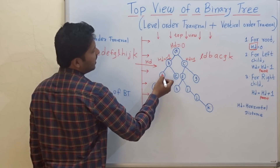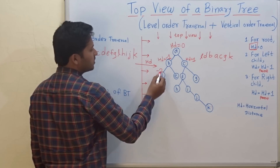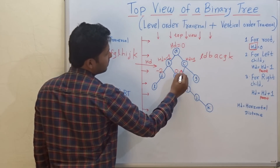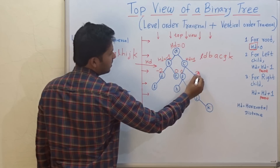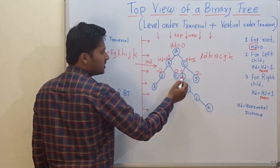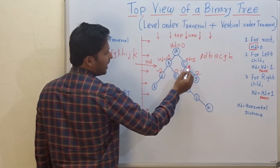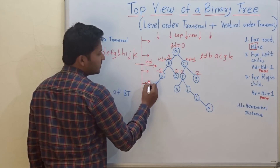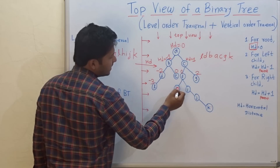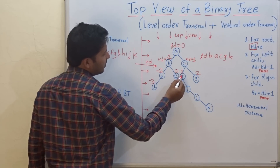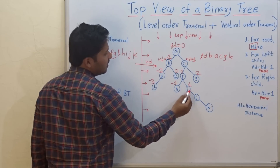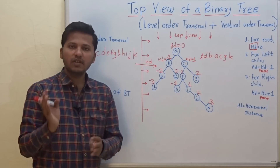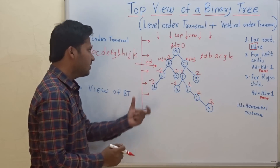Let's go further. For B, the left child is D, so minus 1 minus 1 equals minus 2. For E (right child of B), minus 1 plus 1 is 0. Left child of C is F, so 1 minus 1 is 0. Right child of C is G, so 1 plus 1 is 2. D has left child L, so minus 2 minus 1 is minus 3. F has left child H, so 0 minus 1 is minus 1, and right child I gives 0 plus 1 equals 1. Further right children give 2 and 3. For every right child add 1, for every left child subtract 1.